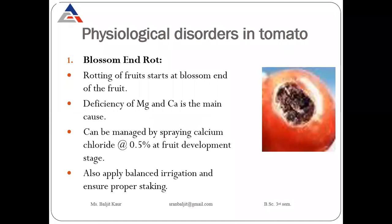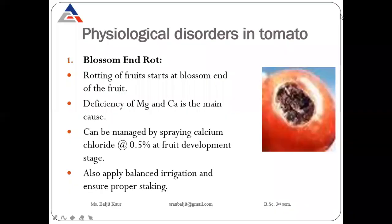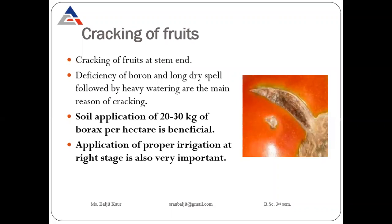Now there are some physiological disorders in tomato. First is blossom end rot — rotting of fruits starts at the blossom end. This is due to deficiency of magnesium and calcium. To control this disorder, fruits should be sprayed with calcium chloride at the rate of 0.5 percent at the fruit development stage, apply balanced irrigation, and ensure proper staking.